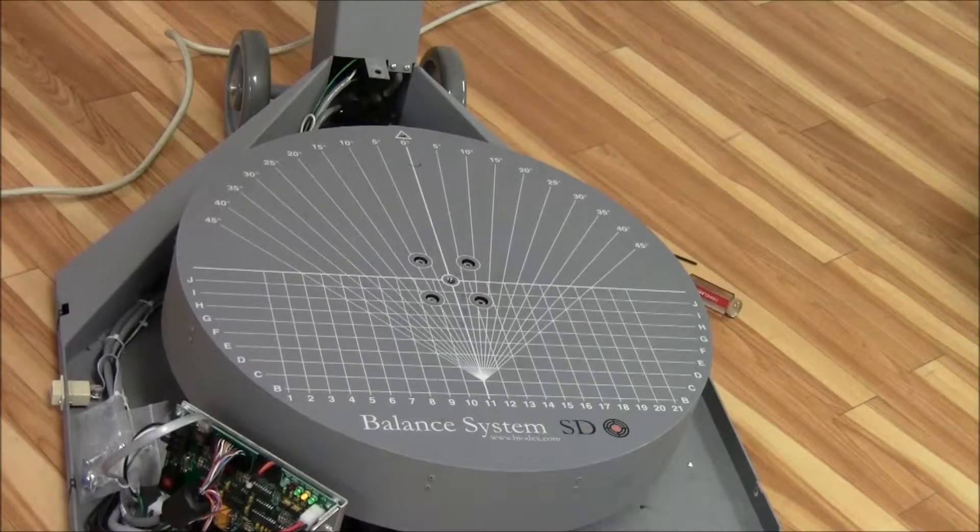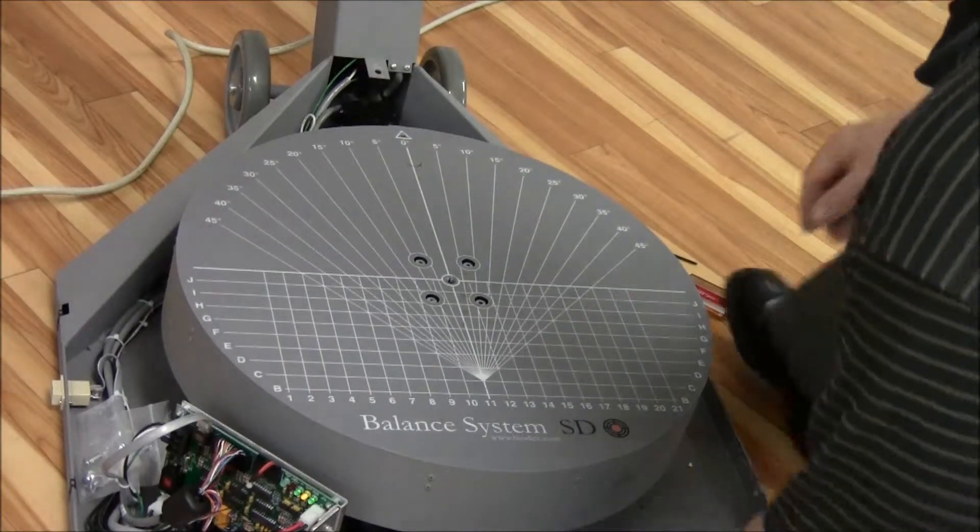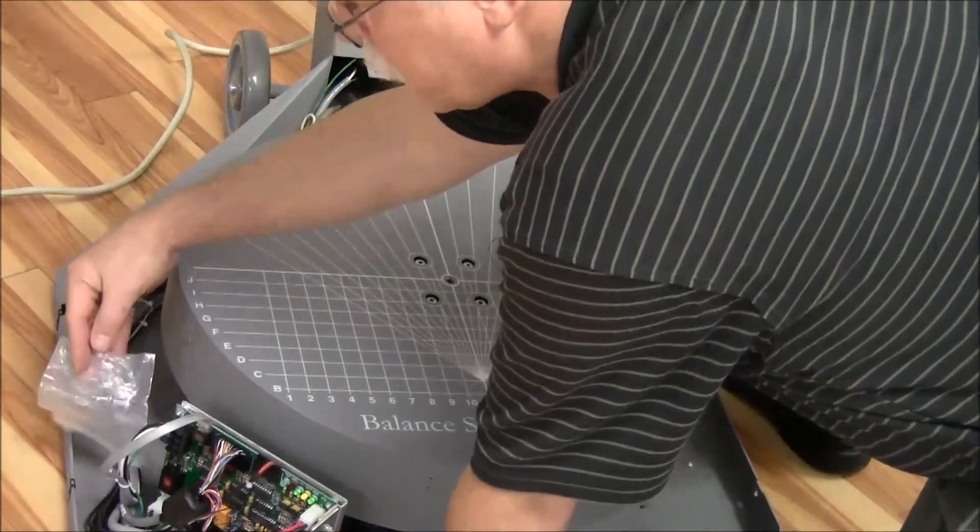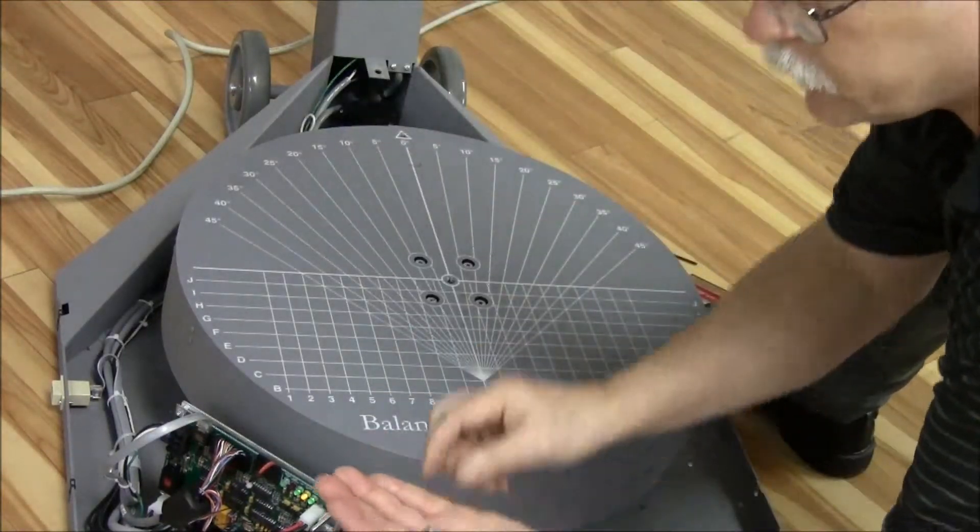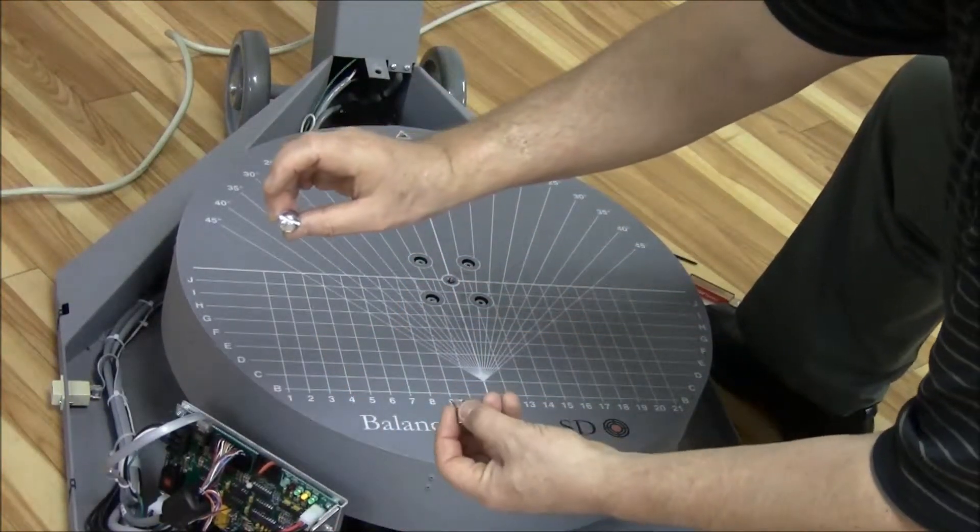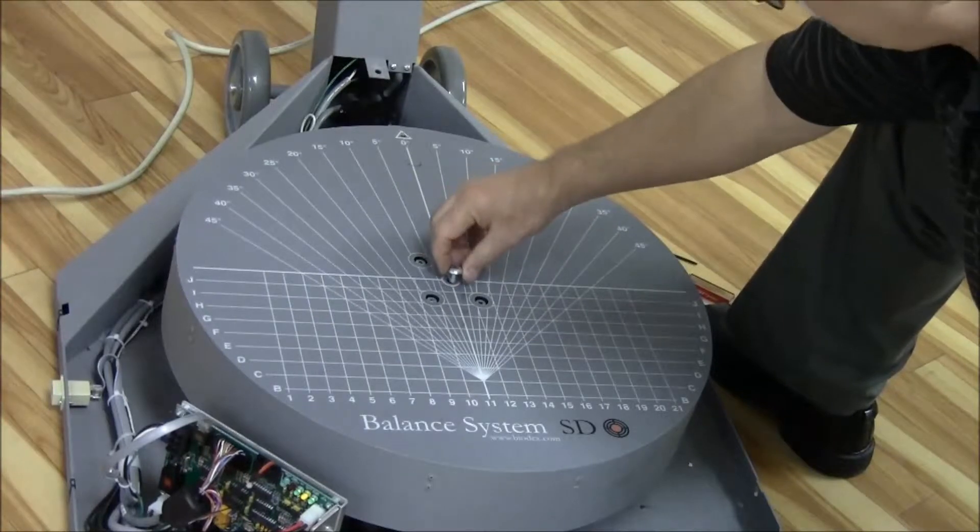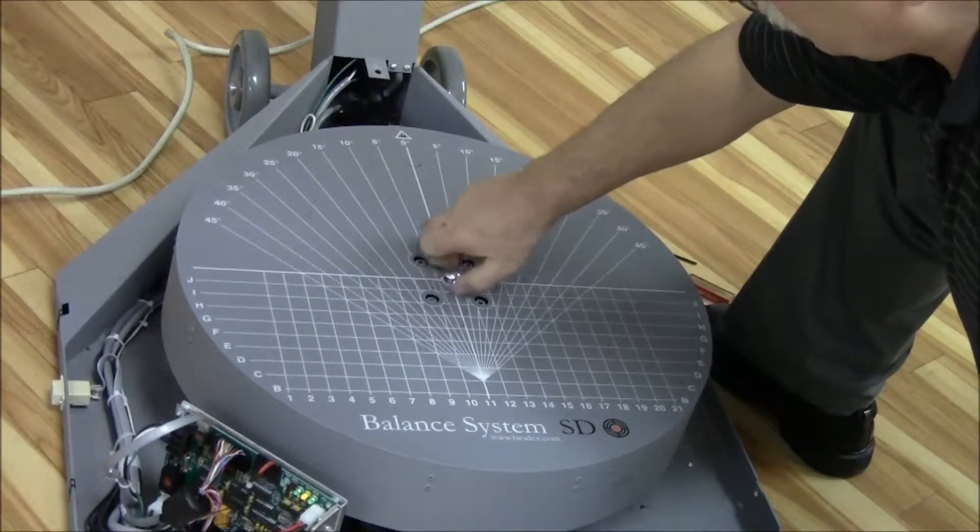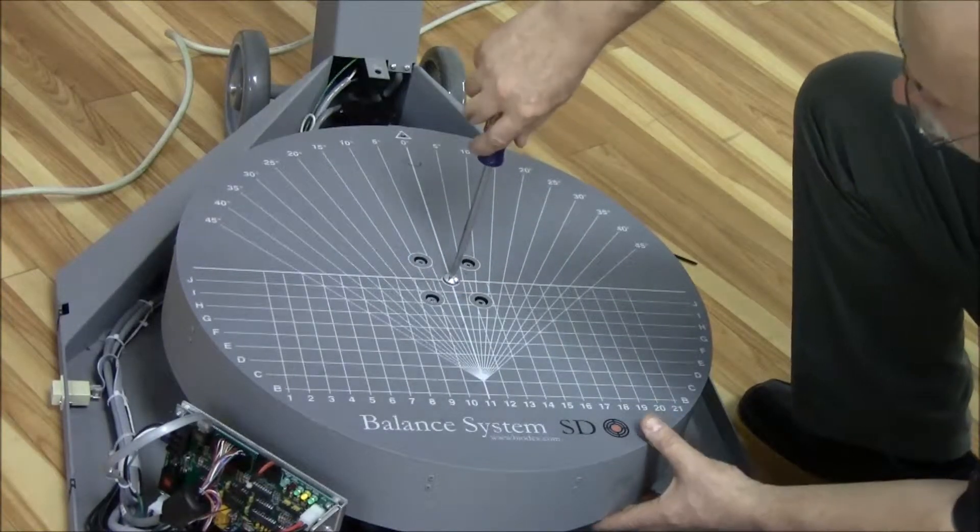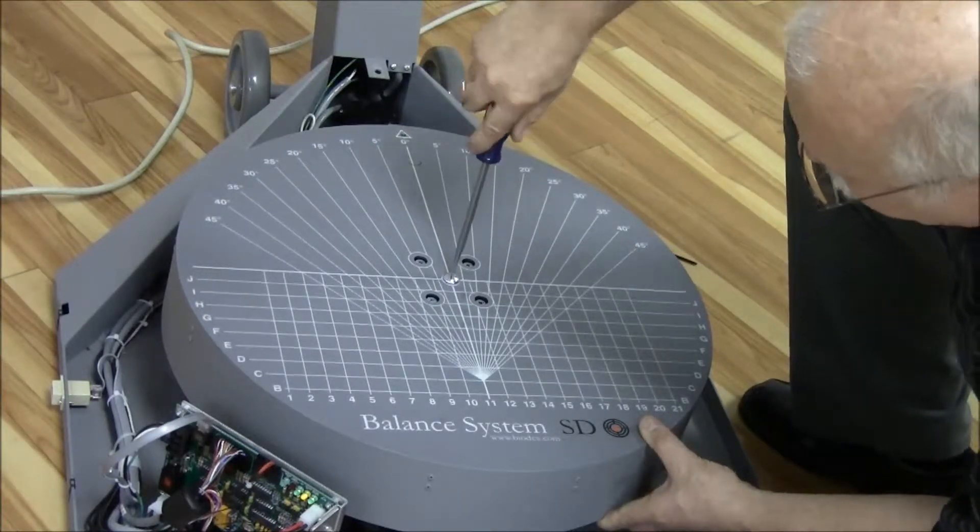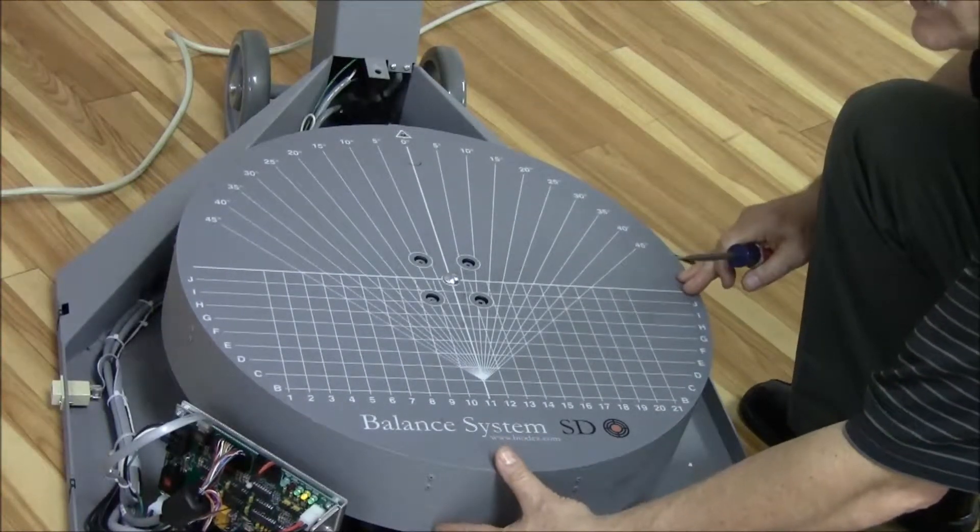The next step is to zero out the strain gauges. The way we do this, we take the cover off. There are two bolts that are tie strapped to the unit. There's two bolts within this package. There's a larger bolt with a flat head and a smaller bolt. We're going to take the larger bolt. You put that into the center of the platform. Screw it down. You're going to tighten it until you feel that the platform comes off of the strain gauges. It lifts off the strain. Just tighten it down as much as you can. And you can feel that there's no tension on the strain gauges at all.